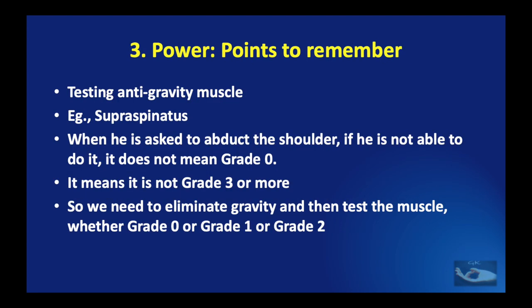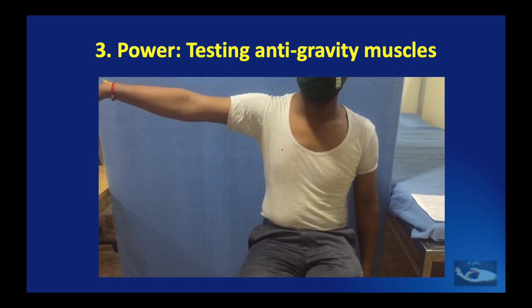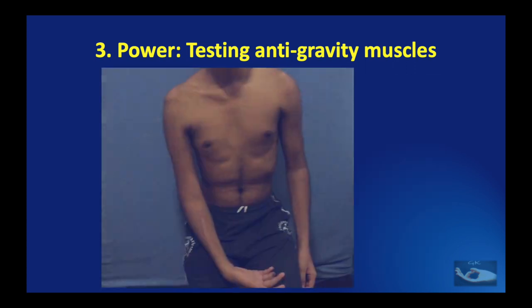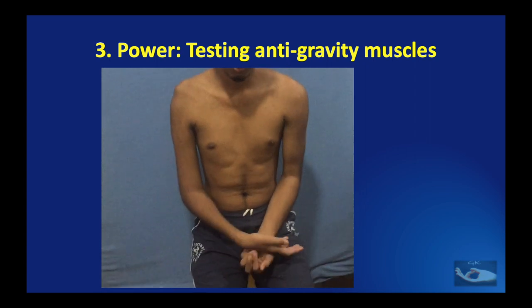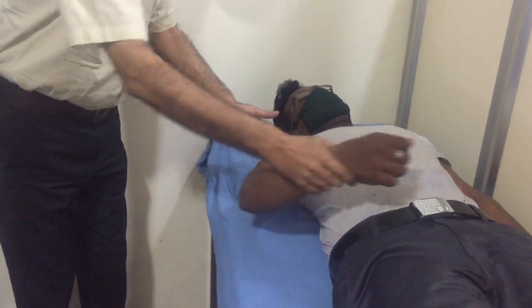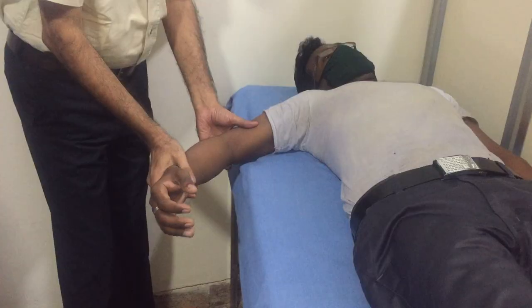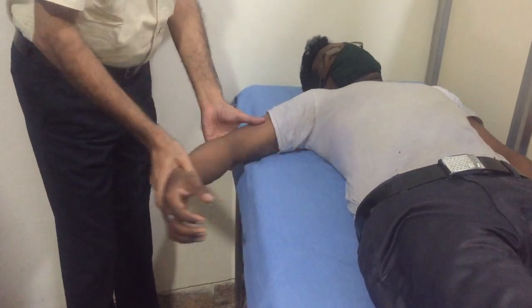When testing anti-gravity muscles such as the supraspinatus, if the patient cannot abduct the shoulder, it does not mean grade 0 — it means the muscle is not grade 3 or more. Gravity must be eliminated first, then the muscle tested for grade 0, 1, or 2. In brachial plexus injuries with shoulder abductor involvement, the patient must be laid down and then the supraspinatus tested. The same approach applies to all anti-gravity muscles like the biceps.